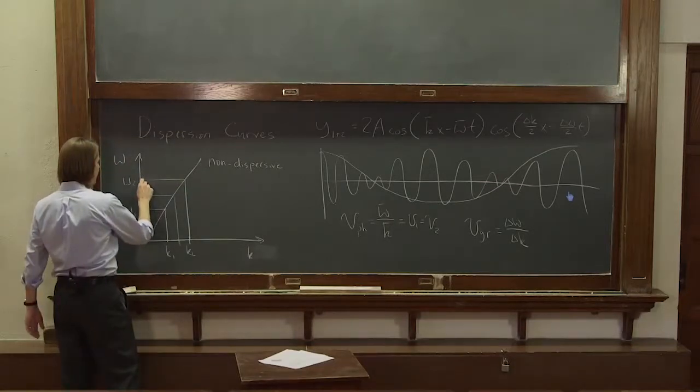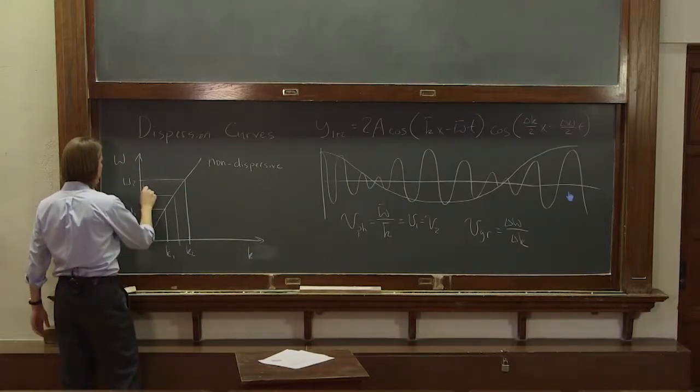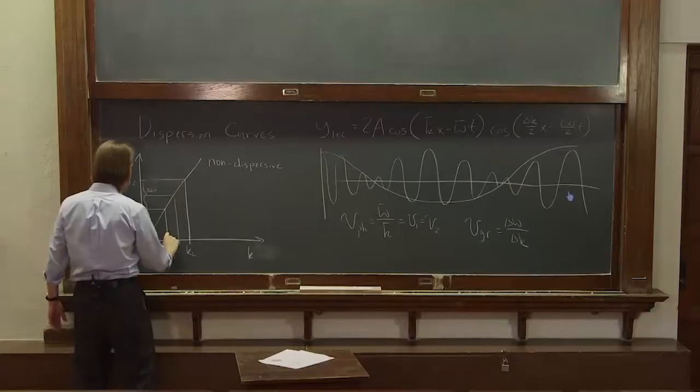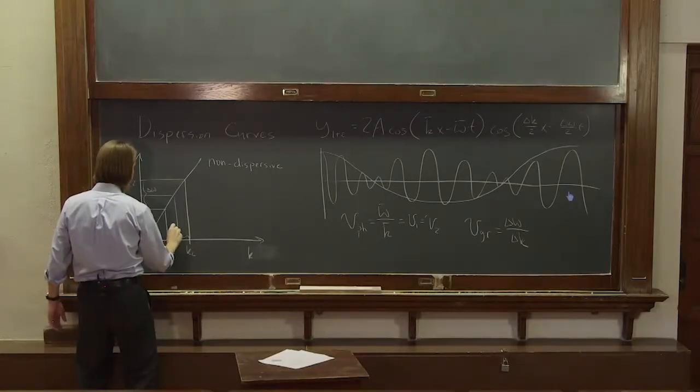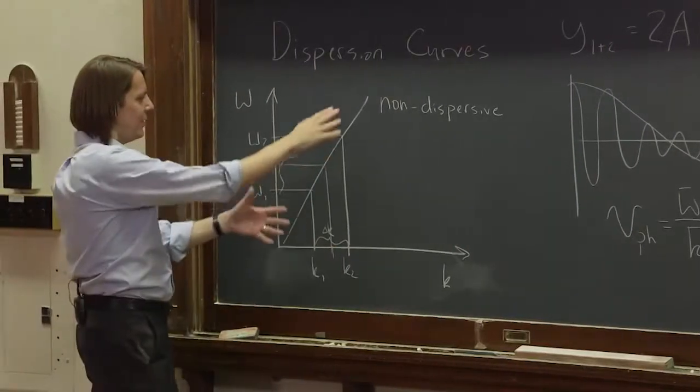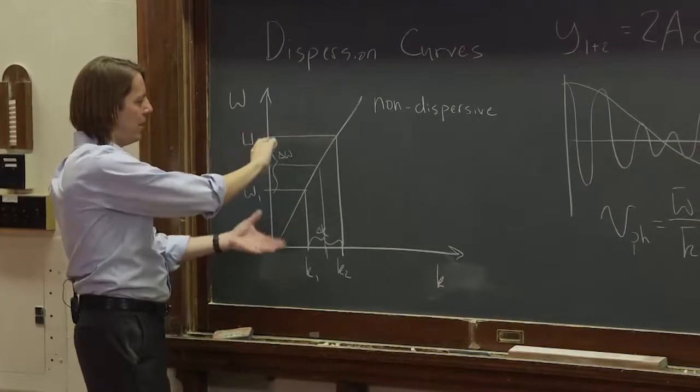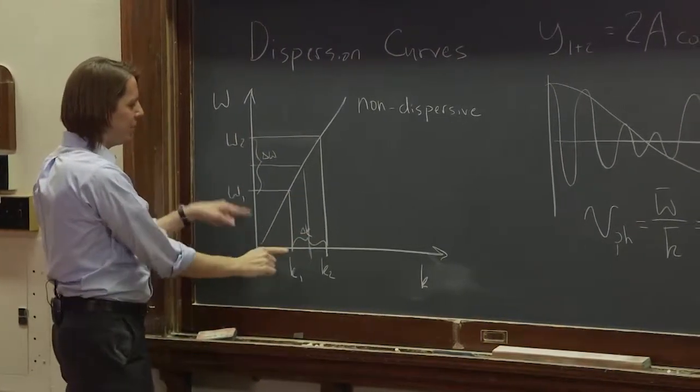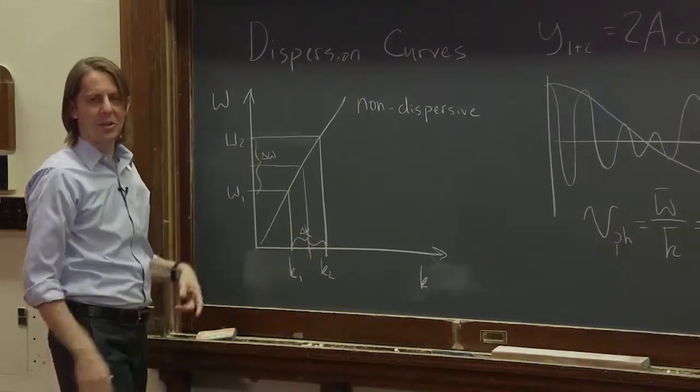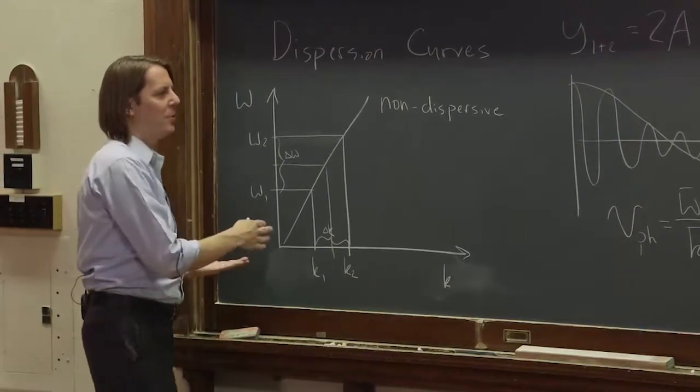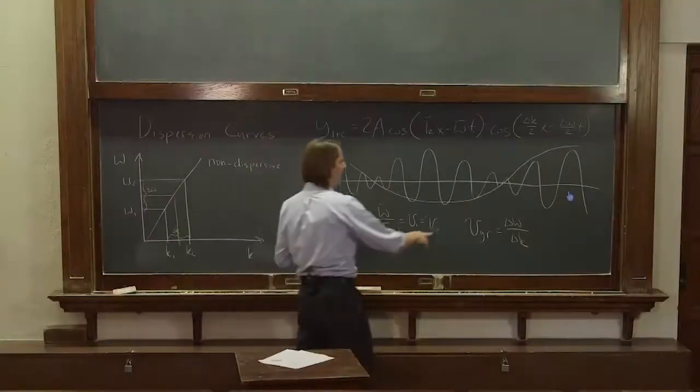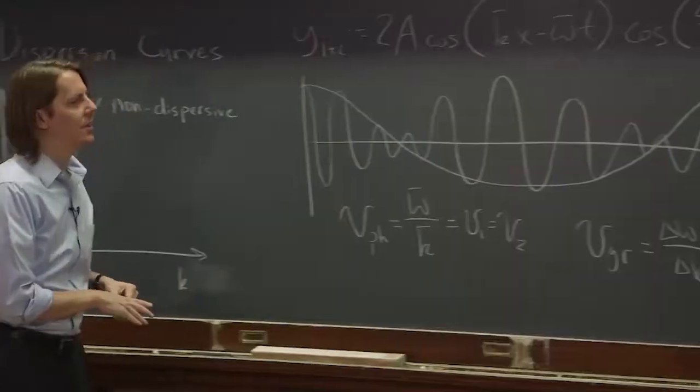That would basically be this amount, delta omega, and this amount, delta k. And since this is all working on a line, any ratio is the same, even if you don't do it from zero. All these ratios come out to be the same. So for the non-dispersive medium, you get delta omega and delta k at the same speed.